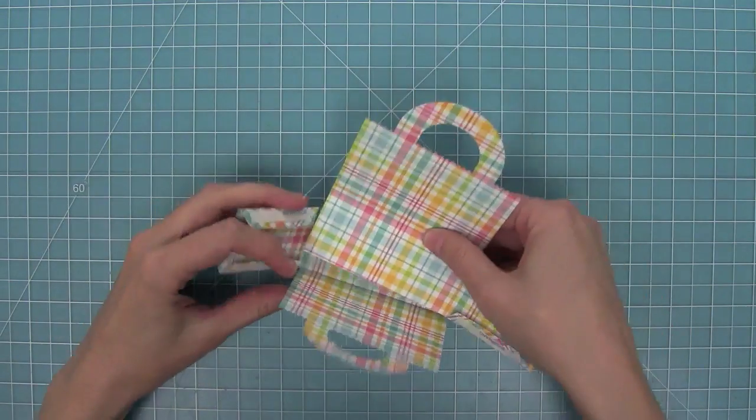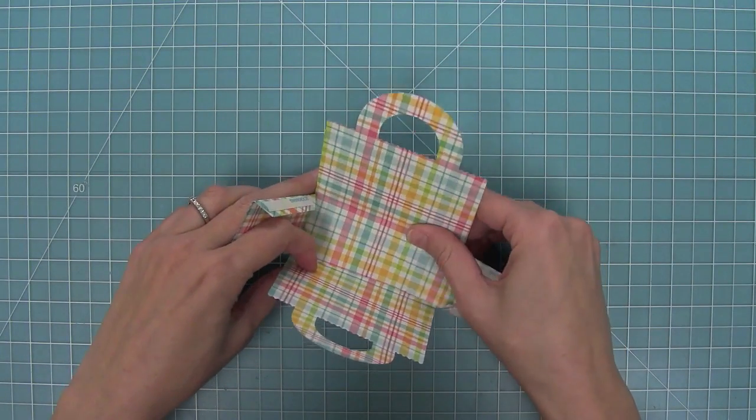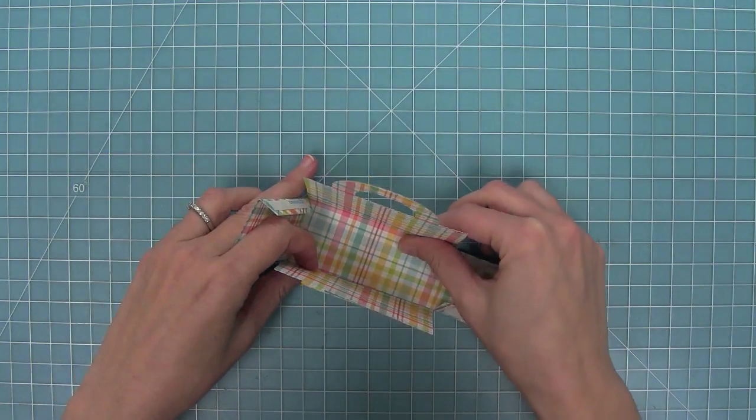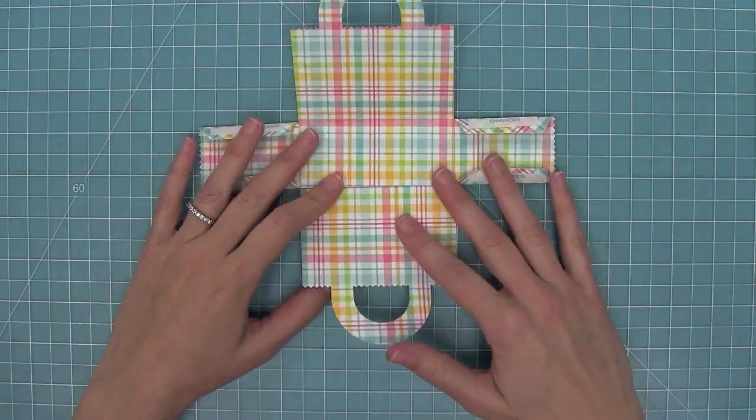Here I've cut a tote bag from one of the brand new perfectly plaid papers. These totes look so cool cut from the plaid papers, and I'm going to assemble the first part of the bag, the T-shaped part of the bag, but then stop there so that I can decorate it.